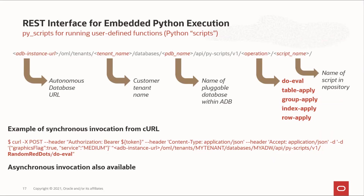OML4Py on Autonomous Database also offers a REST interface for invoking embedded Python execution functions. Here are some of the REST endpoints for invoking user-defined Python functions stored in the script repository. In this example, which is invoked synchronously from curl, we use the doOval operation on a user-defined function called random red dots. Asynchronous invocation of REST endpoints is also supported.